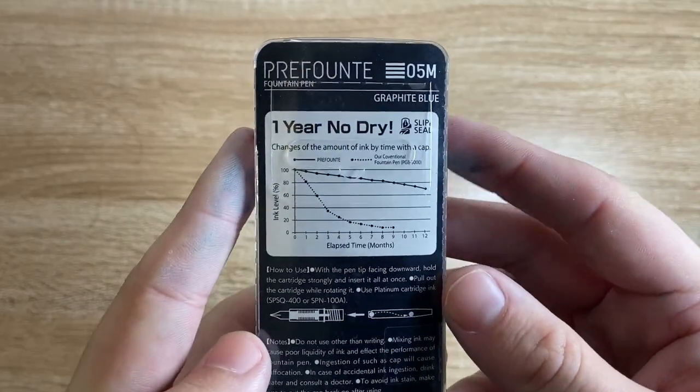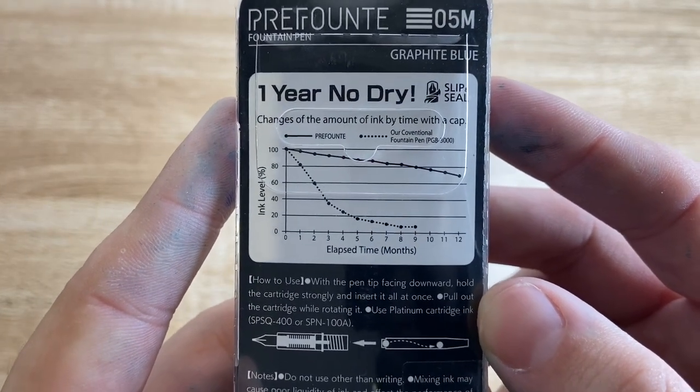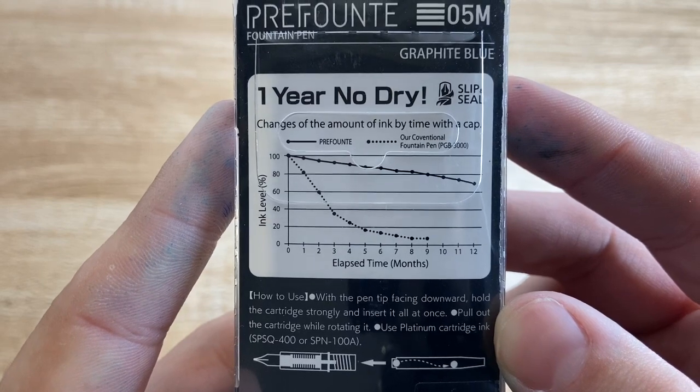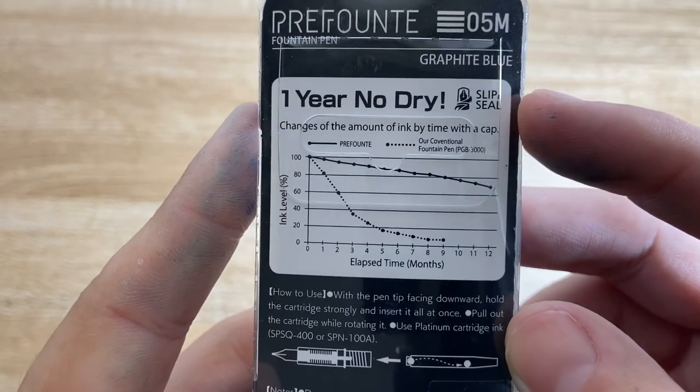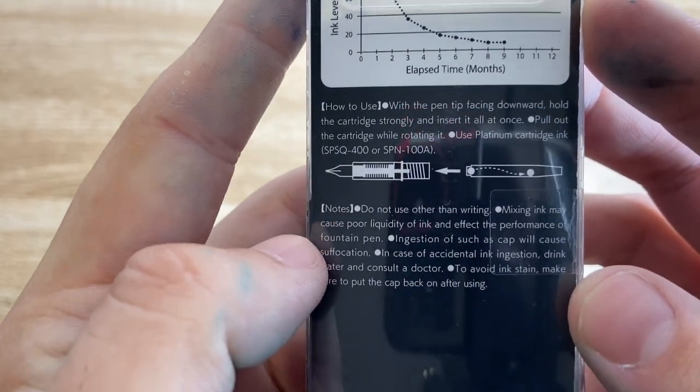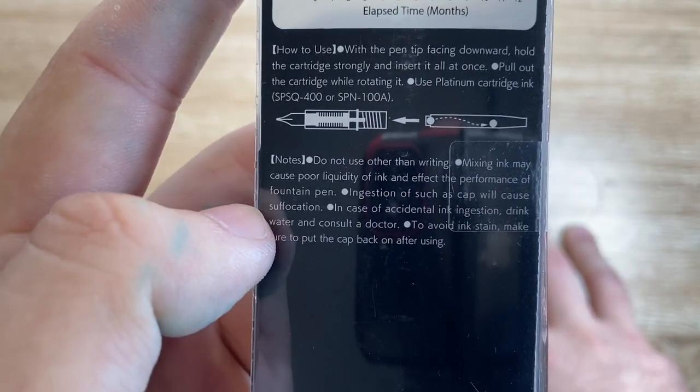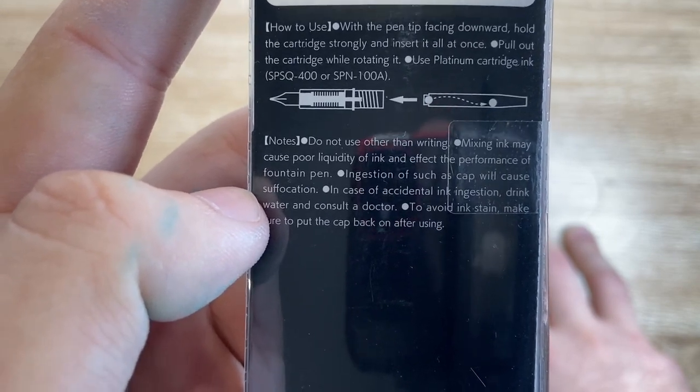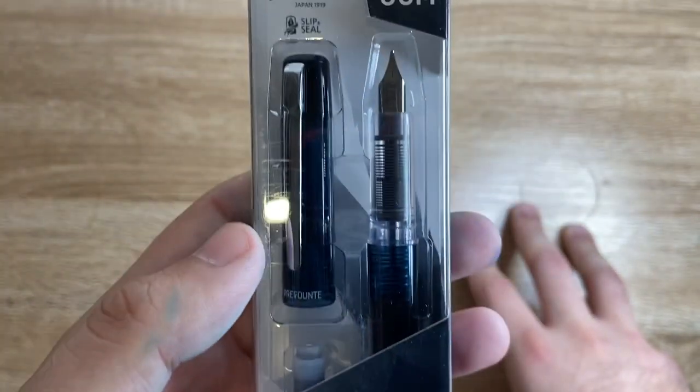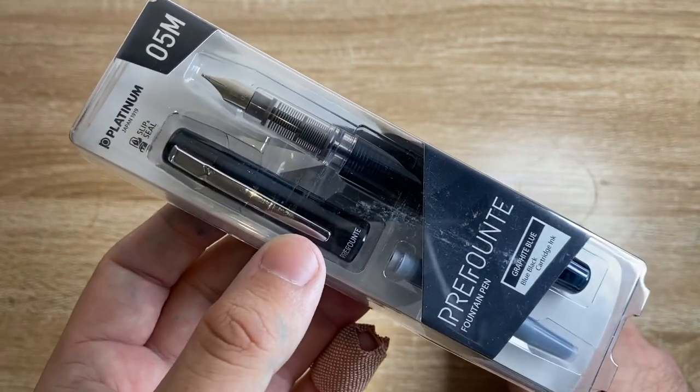Before I do that, I just want to show you the back of this packaging. It's quite interesting. It's got one year no dry and shows a graph there of how the ink evaporates with the cap, which is an interesting way of showing a comparison of a pen with their slip and seal mechanism. It also says how to use, shows you how to put the cartridge in and then a few little extra notes about things like don't use for anything other than writing. This is the graphite blue version of the Prefonte. It comes with a number of different colors actually. Let's ink this up and let's see what it's all about.